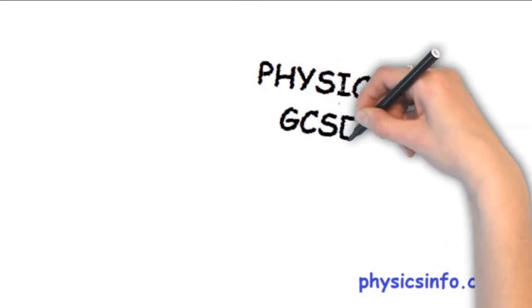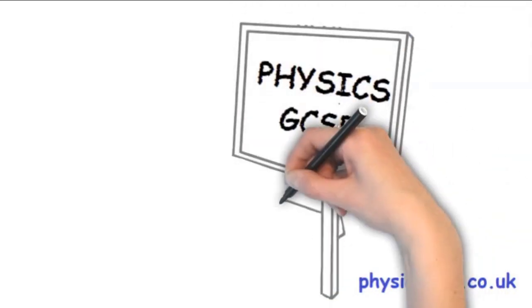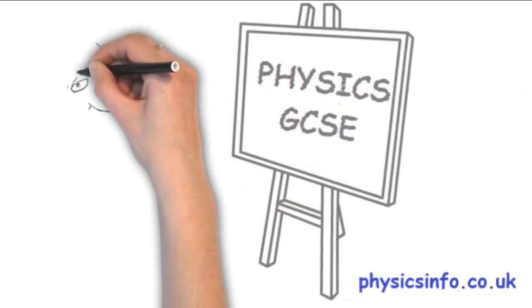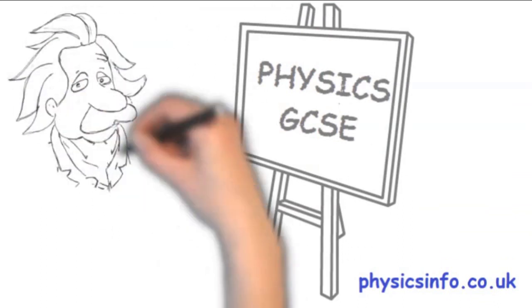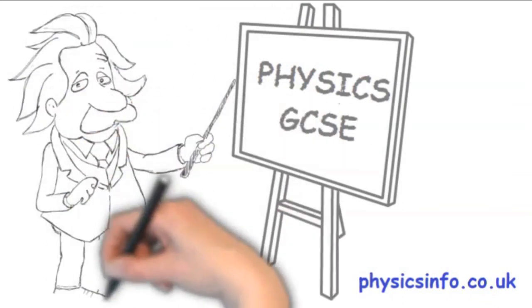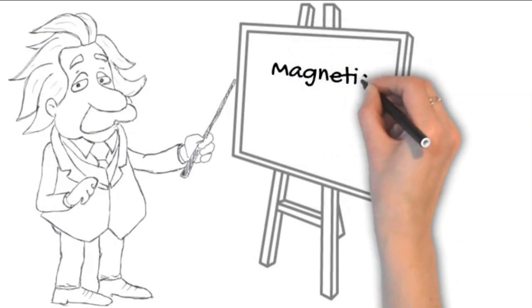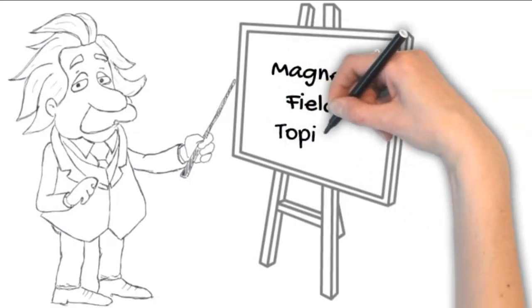Physicsinfo.co.uk, another in the series of Physics GCSE revision topics. Topic 12: Magnetic Fields and Magnetism, Separate Science.